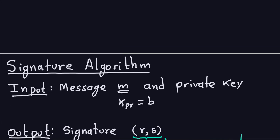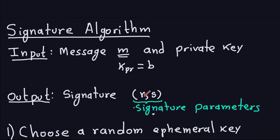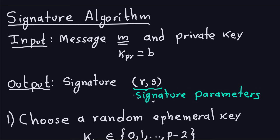The input for the signature algorithm is the message m that you want to sign and the private key b. The output is of course a signature. The signature in the ElGamal case is going to be a pair of numbers R and S — a little different from the RSA signature which is only one number S. So the signature for the ElGamal consists of two numbers, which we call the signature parameters R and S.